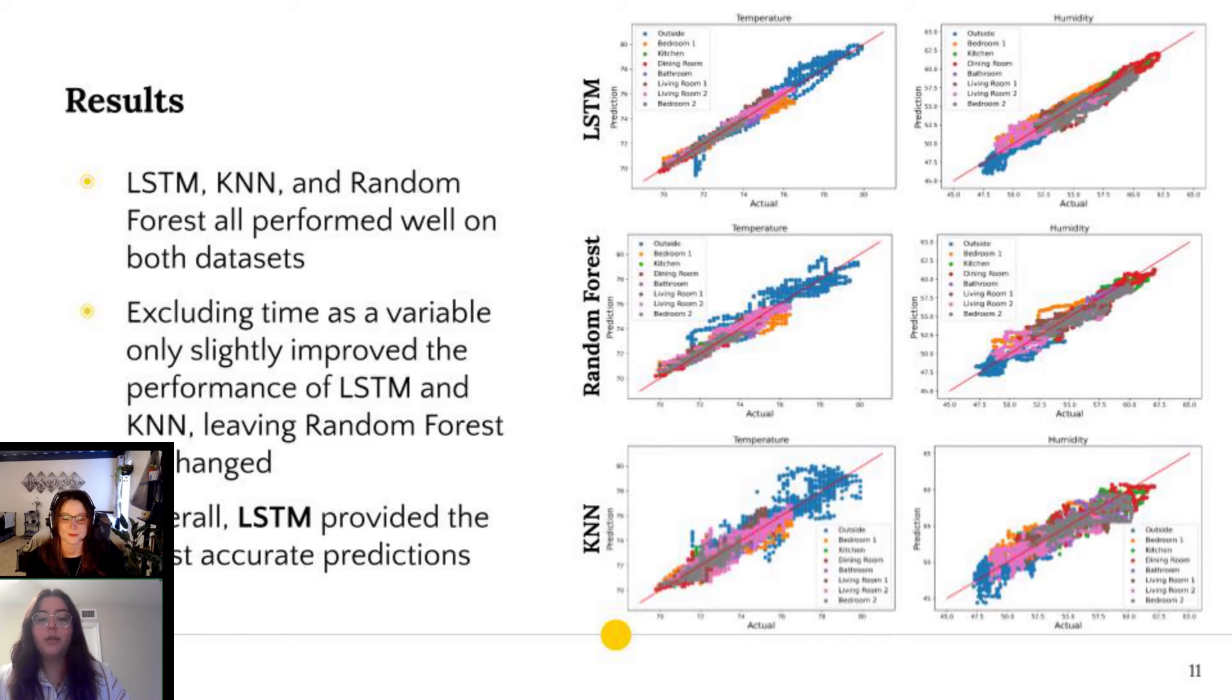These graphs show the temperature and humidity predictions for all three algorithms when trained without time as an input. The x-axis is the actual temperature and humidity values we collected from our testbed, and the y-axis is the predicted values the algorithms generated. Each of the colors on the graph represents a different sensor inside of the scaled home, and the red line represents a perfectly accurate prediction. As you can see, for all three algorithms, the predictions follow the path of the correct prediction line with varying degrees of separation. However, LSTM has the points clustered much more closely around that red line than the other two algorithms.